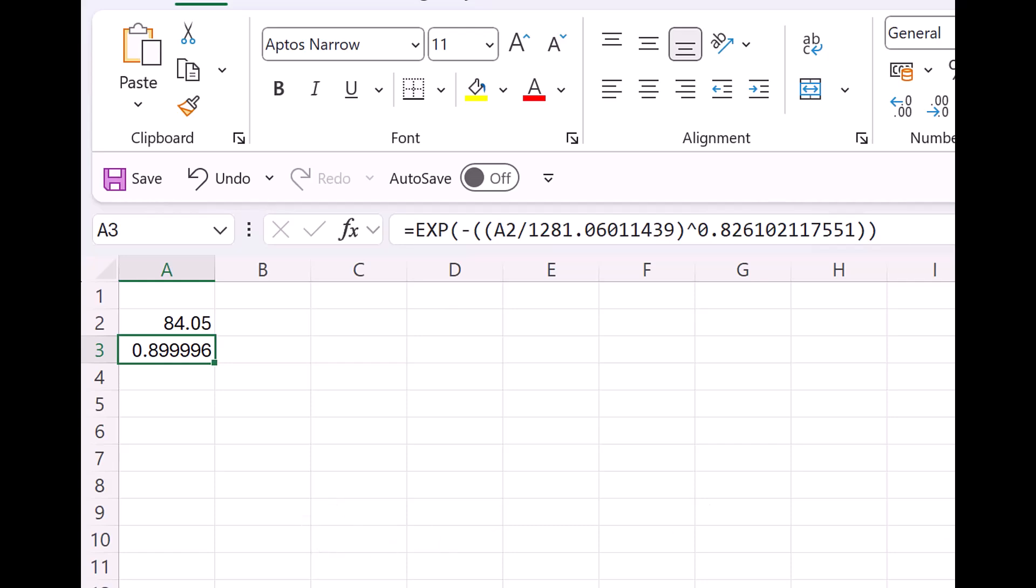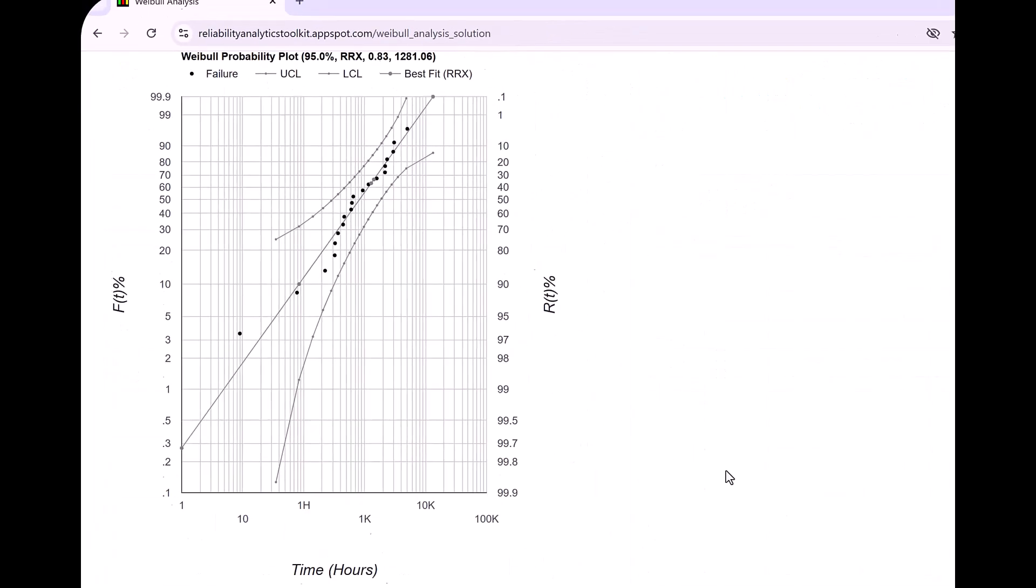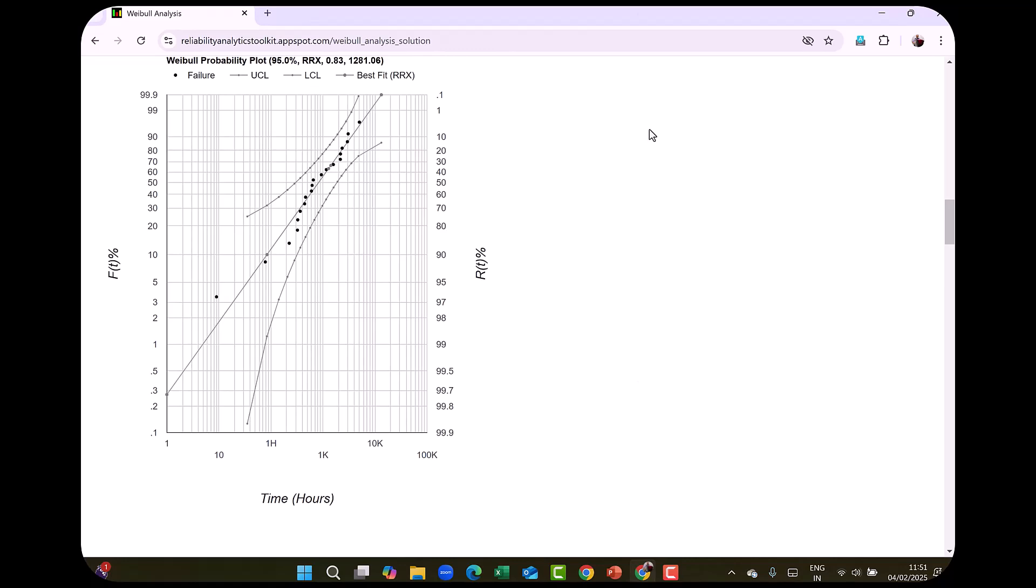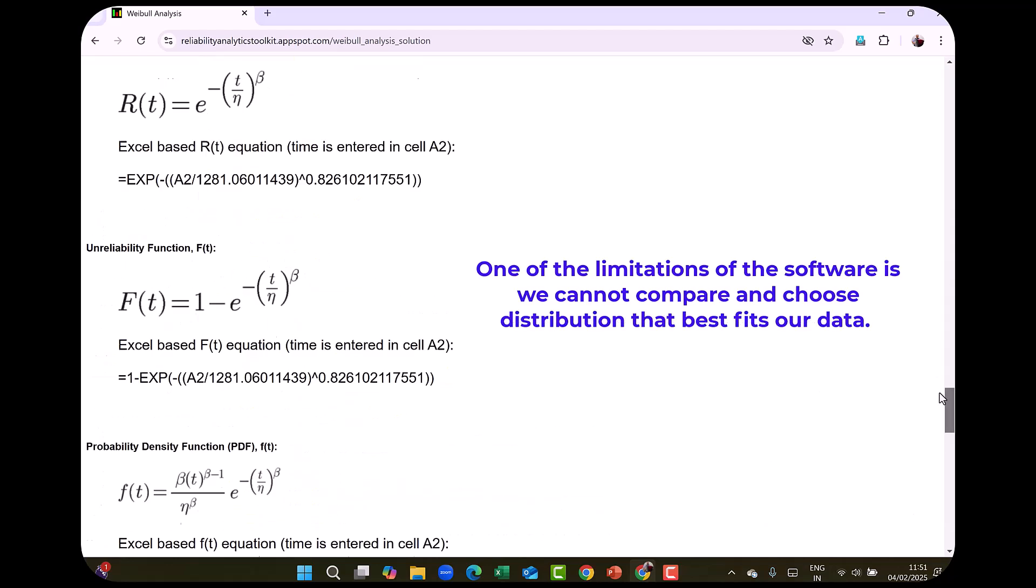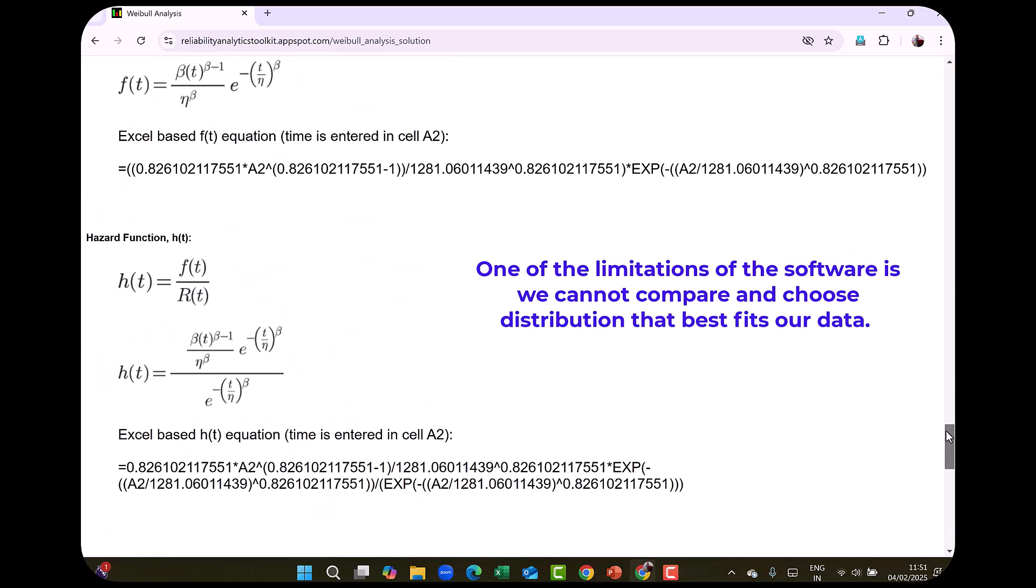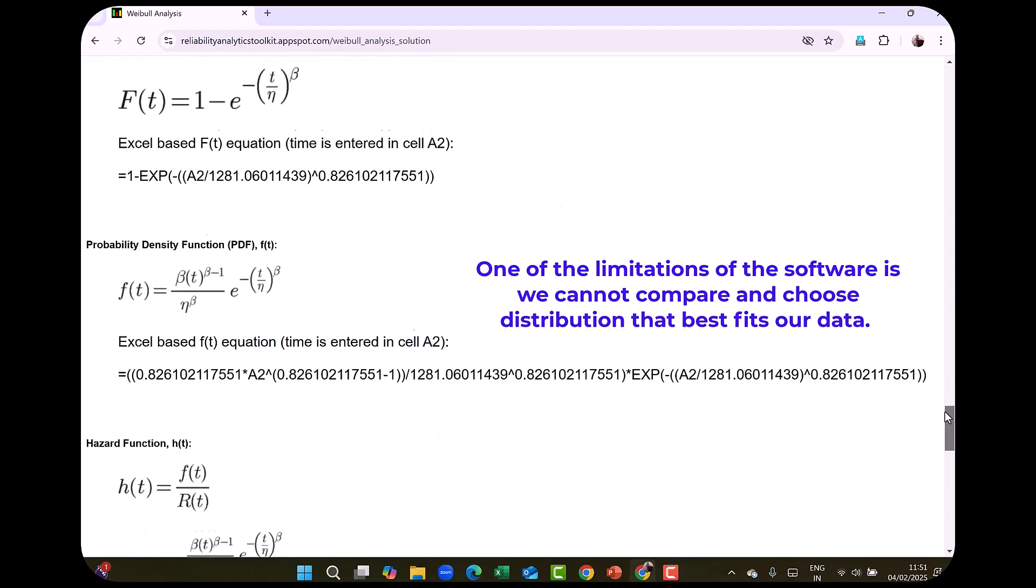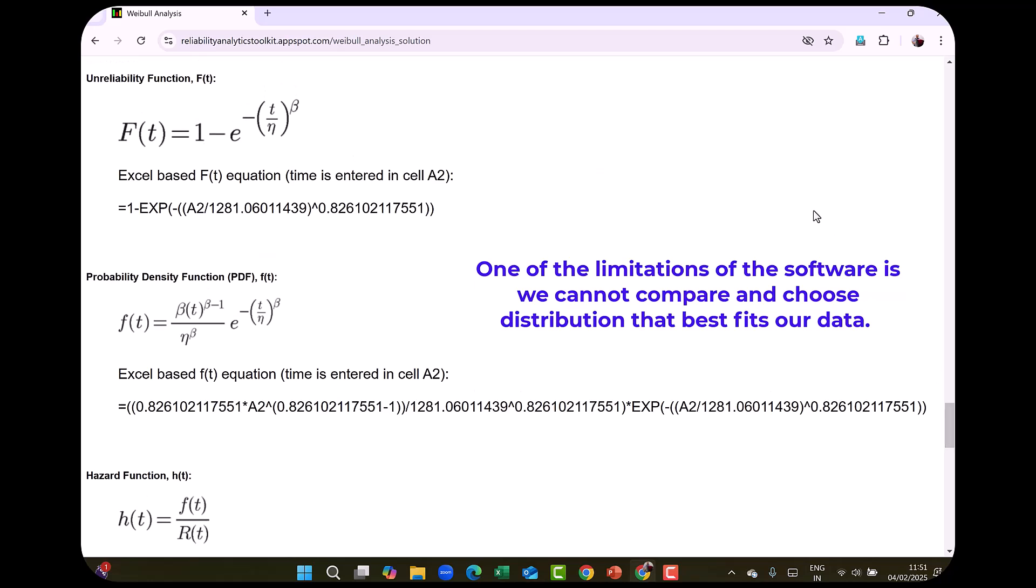So it gives a beautiful calculator also which you can directly paste in Microsoft Excel. So this is a very nice open source software. One of the limitations of this is you cannot select the distribution that is the good fit for your particular data. Like softwares like Minitab or Weibull++ they will show you which distribution is the best fit. But in many cases finally we tend to choose Weibull. So this works in most cases.